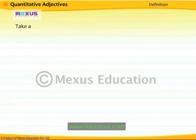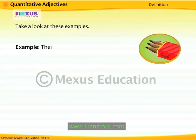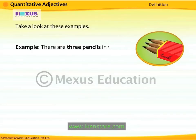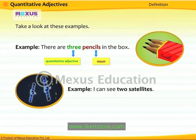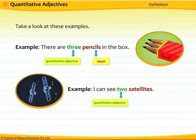Let us take a look at some examples. In the first example, 'There are three pencils in the box,' the word 'three' answers the question 'How many pencils?' — hence 'three' is a quantitative adjective. In the second example, 'I can see two satellites,' the word 'two' answers the question 'How many satellites?' — hence 'two' is a quantitative adjective.